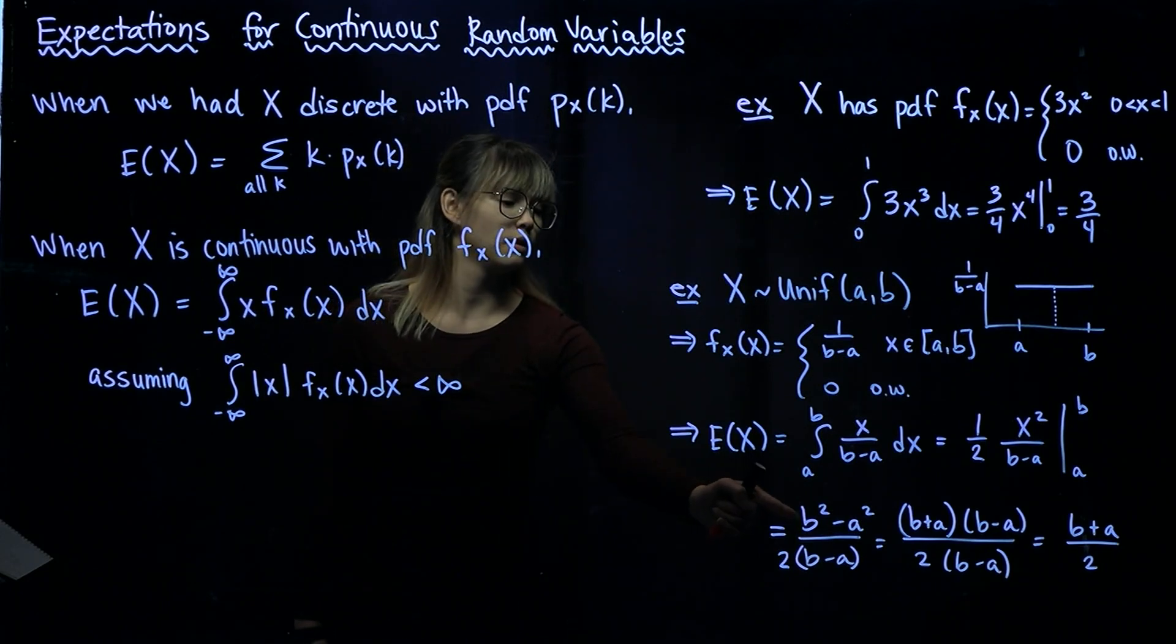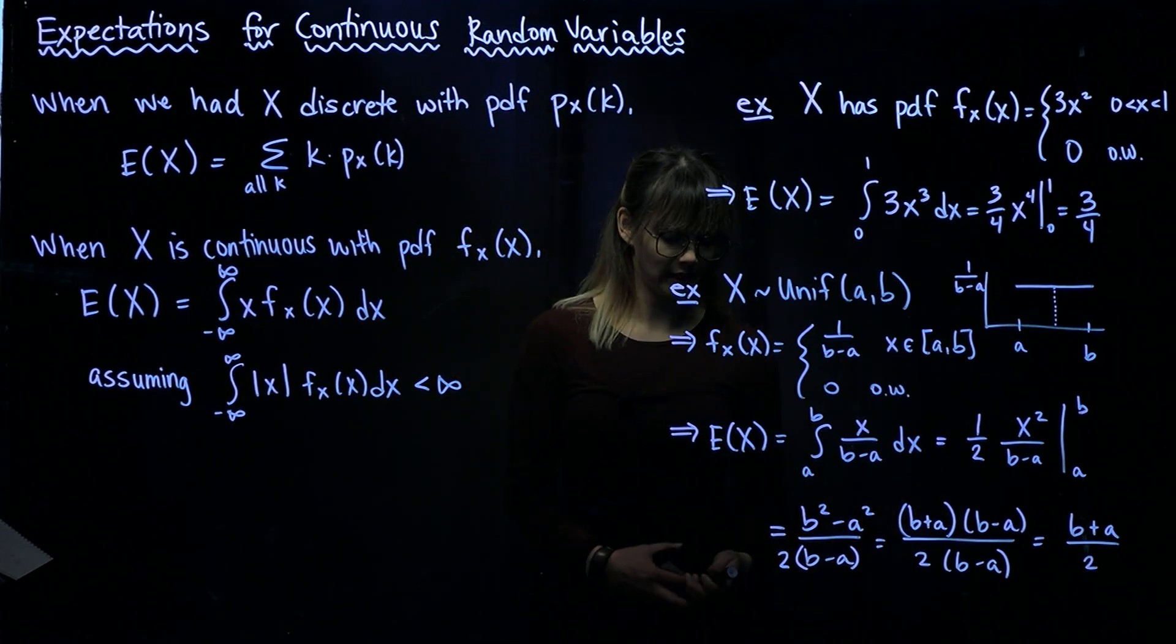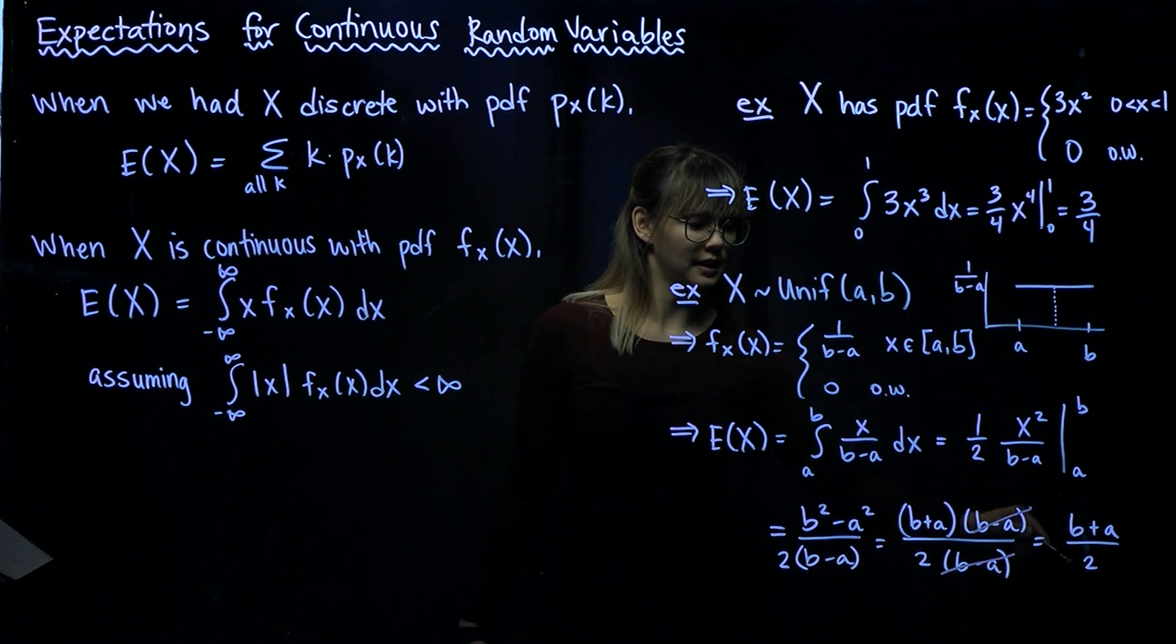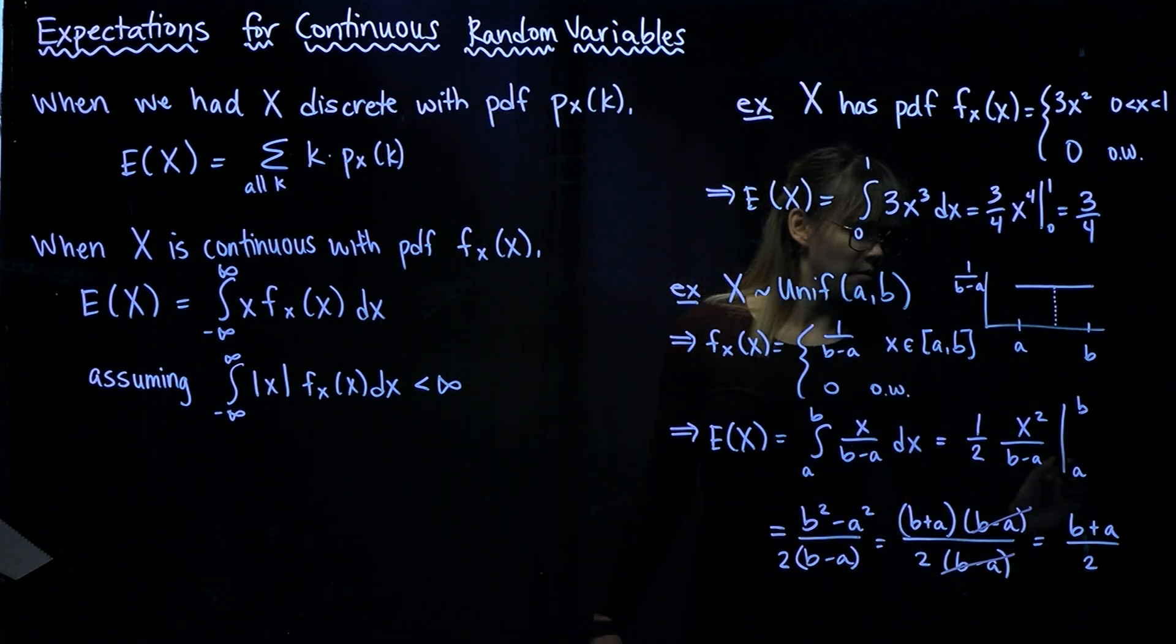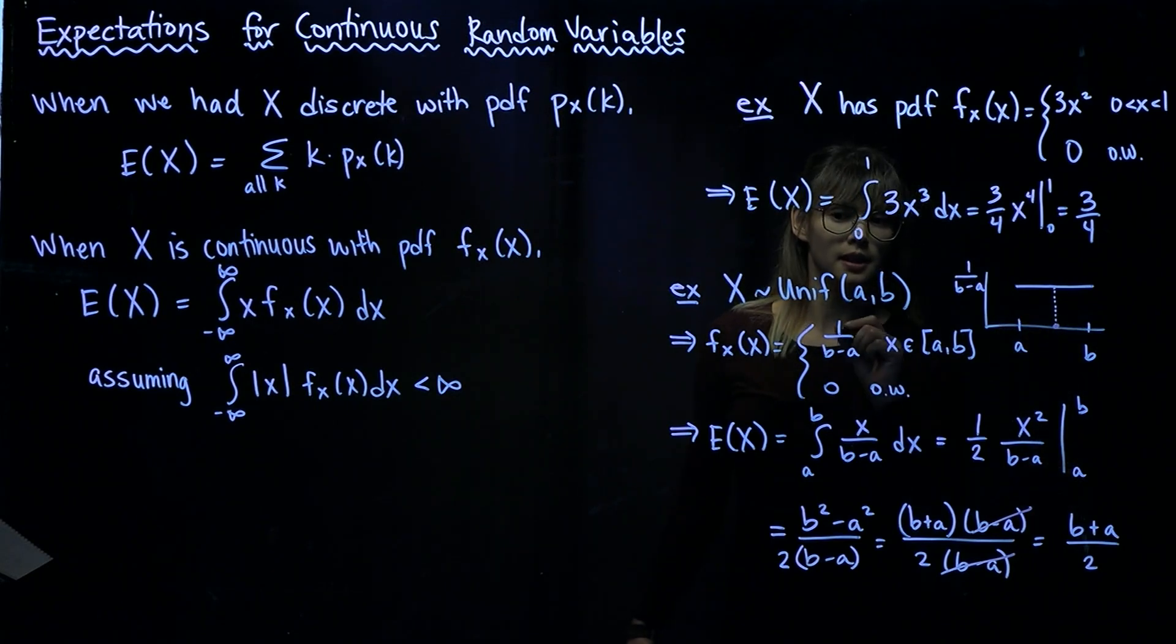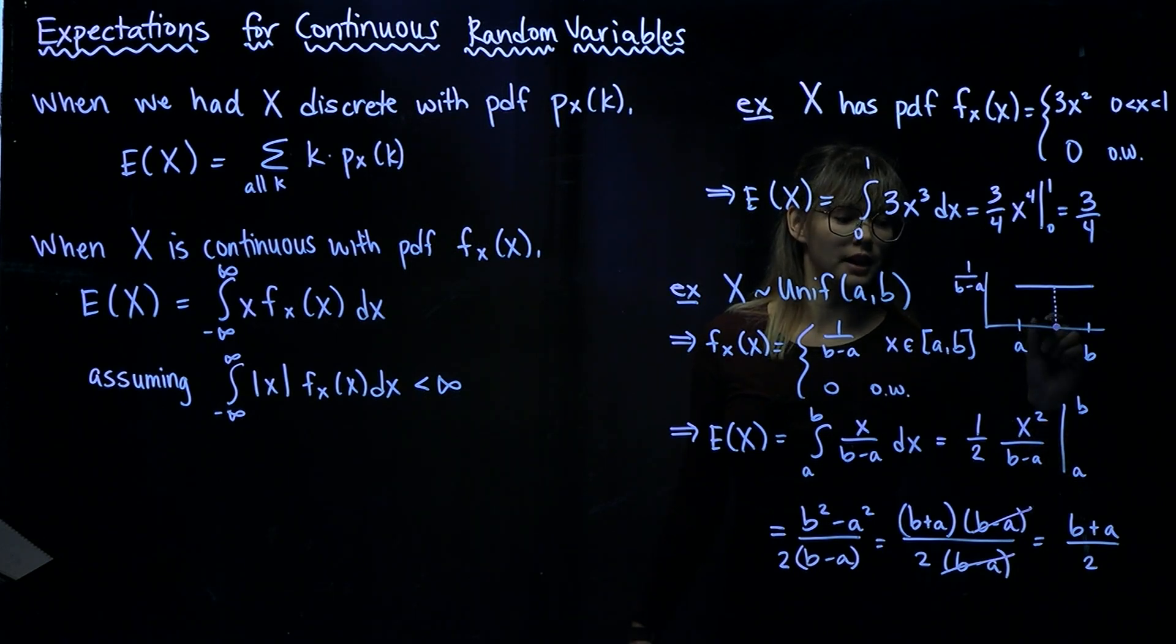Now, if we rewrite B squared minus A squared as B plus A times B minus A, we see that things are going to cancel out. So the B minus A's are going to cancel out, and that'll leave B plus A over 2. So B plus A over 2, that's the midpoint here. That's the midpoint between A and B. So because X is a random variable with a symmetric PDF, then the expected value of X is just the midpoint of that PDF.